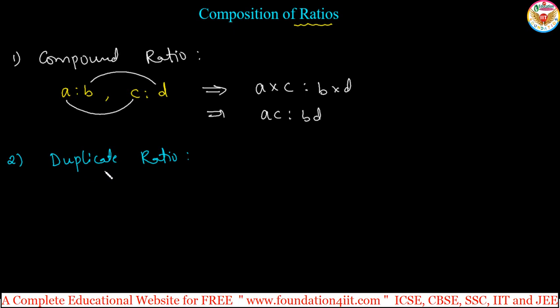In this, duplicate ratio of A is to B. A is to B is one ratio, right? Duplicate ratio is same compound ratio of A is to B and again A is to B. If you take A square is to B square in it. Duplicate ratio of A is to B is equal to A square is to B square, right? Same number, square it is.